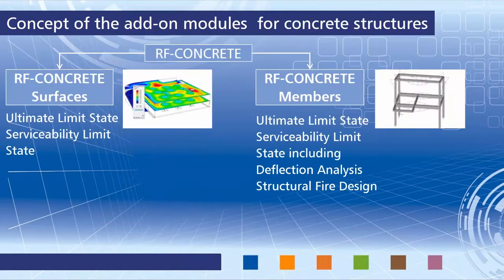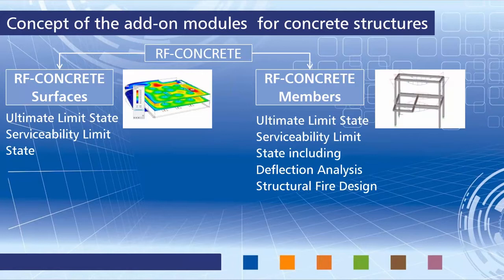Let's get started with the concept of our module family for the design of concrete structures. RF Concrete is split into two modules: RF Concrete Surfaces and RF Concrete Members. The Surfaces module is for the design of surfaces like concrete slabs, walls or shells, and RF Concrete Members is for the design of members. In both modules the ultimate limit state is proved and the required lateral reinforcement is calculated for bending, shear and torsional loads — this is Chapter 6 of Eurocode 2.